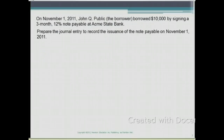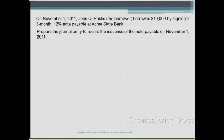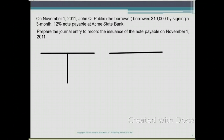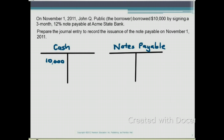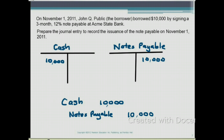Let's look at an example. On November 1, 2011, John Q. Public, the borrower, borrowed $10,000 by signing a three-month, 12% note payable at Acme State Bank. First, prepare the journal entry to record the issuance of the note payable on November 1, 2011. On the date we borrowed the money, we debit cash $10,000 because we received cash, and we credit notes payable $10,000 because our debt increases. So the journal entry is: cash debit $10,000, notes payable credit $10,000.